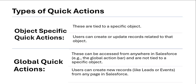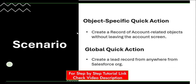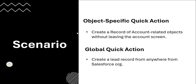After creating quick actions — both object-specific and global — there are different ways to add these actions to the page layout. Watch the video till the end to get the full idea about quick actions, and do subscribe to our channel and hit the bell icon for regular updates. Now let's take a scenario to better understand. First we will look at object-specific quick actions. The scenario is: create a record of an account-related object without leaving the account screen.